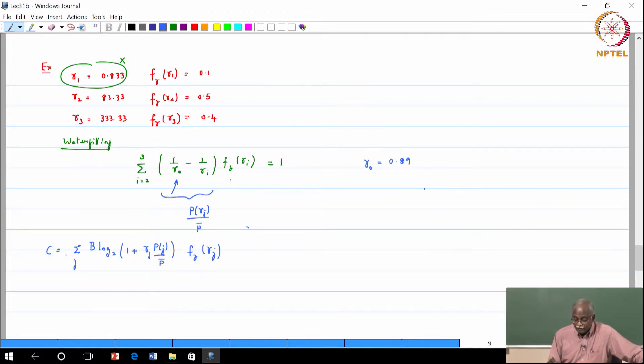That is what we are trying to do. So basically this portion of P J by P bar if I substitute the expression for it, so I use the following: P of gamma J by P bar is given by 1 over gamma 0 minus 1 over gamma J with a plus sign. If I use that basically there are 2 states.